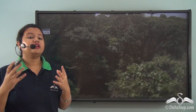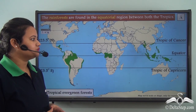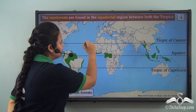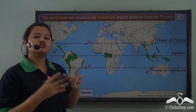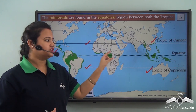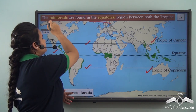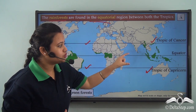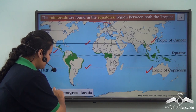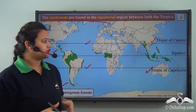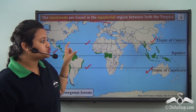Now let us find out where in the world rainforests are found. Rainforests are found on either side of the equator and between both the tropics — that is the Tropic of Cancer and the Tropic of Capricorn. So rainforests exist in the tropical region across the equator, and therefore they are also known as equatorial rainforests since they exist very close to the equator.